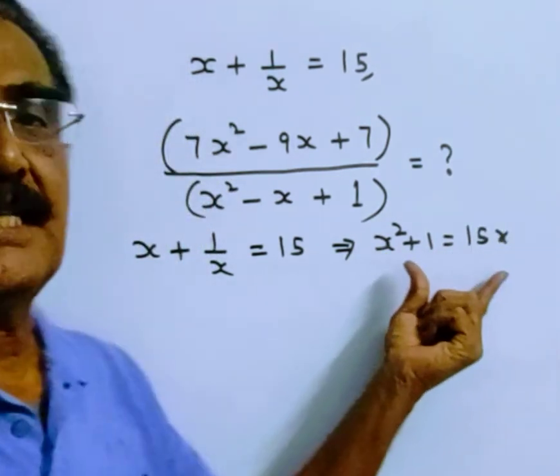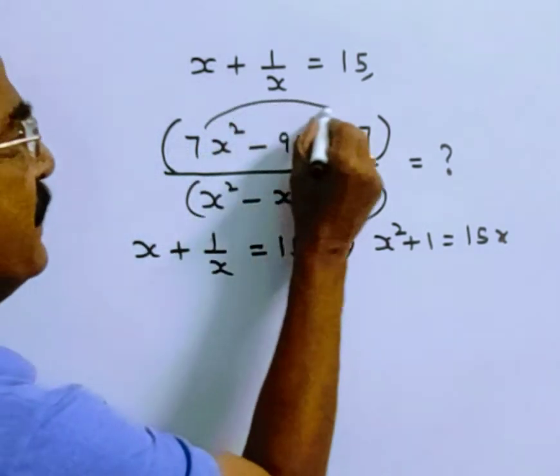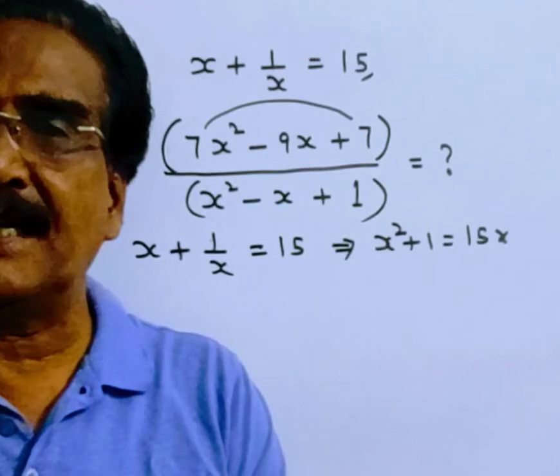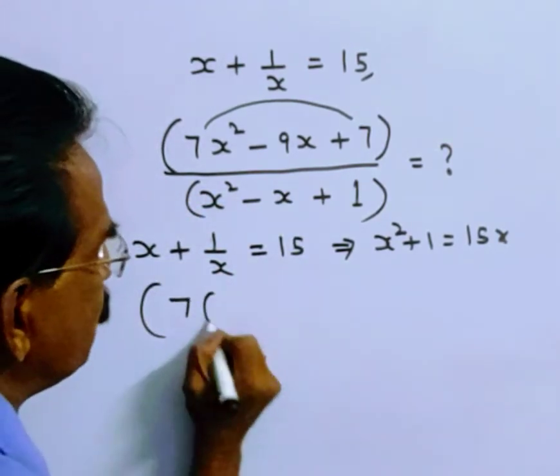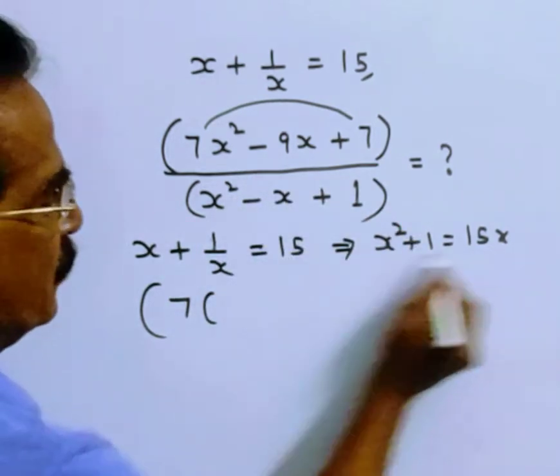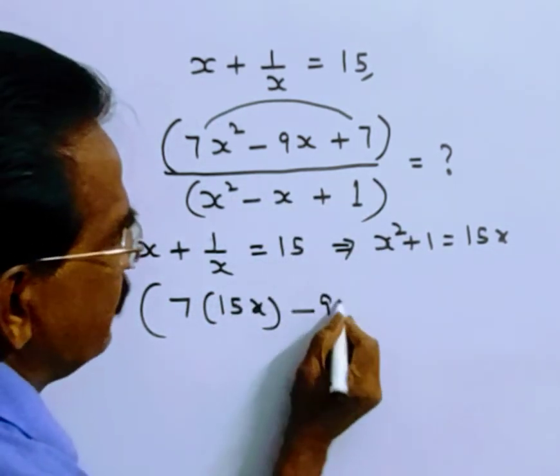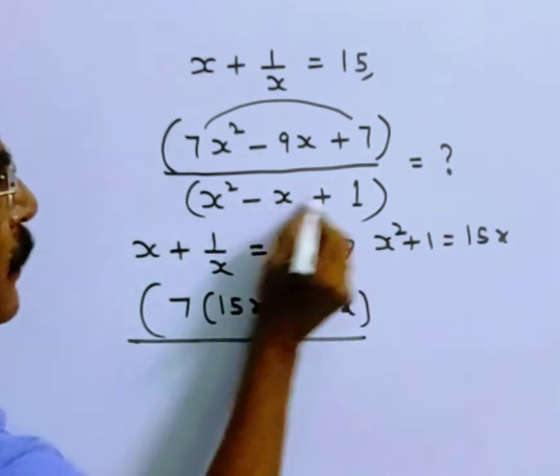Let us substitute this value in the given expression. This is 7x² plus 7, which equals 7 into (x² plus 1). Since x² plus 1 is equal to 15x minus 9x over x² plus 1.